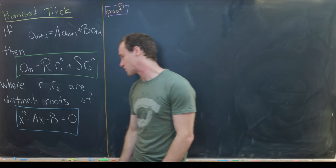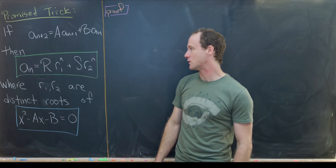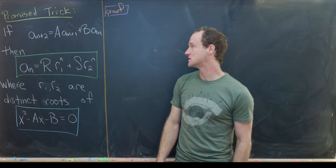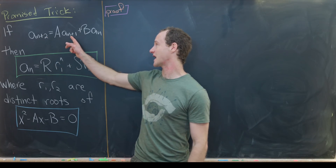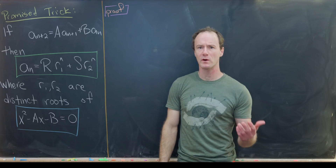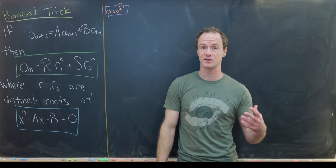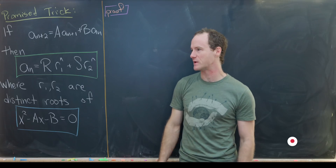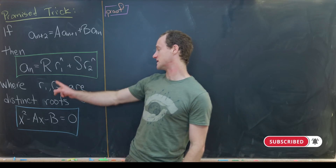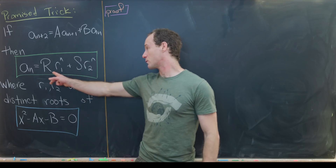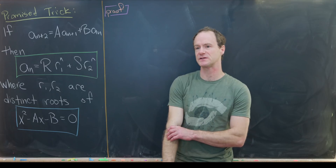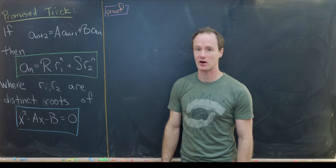That characteristic polynomial is x² - Ax - B = 0. You might ask about the seeds — the zeroth and first terms. It turns out those do not influence the roots r₁ and r₂ at all; they influence the constants R and S. So that's something you take care of afterwards. Looking at this polynomial and finding its roots gives you a rough idea of the closed form.